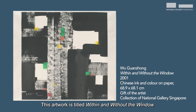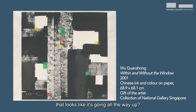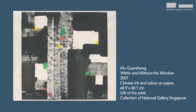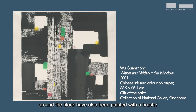This artwork is titled Within and Without the Window. Did you notice that this artwork is made out of only rectangles? Can you spot the tallest rectangle that looks like it's going all the way up? What about the horizontal ones? And the tiniest ones? I wonder what was used to create the rectangles? I'm guessing a brush. Could the white rectangles around the black have also been painted with a brush?